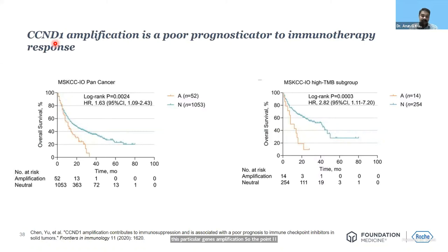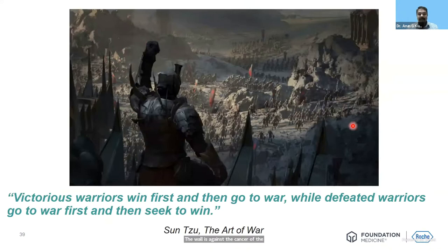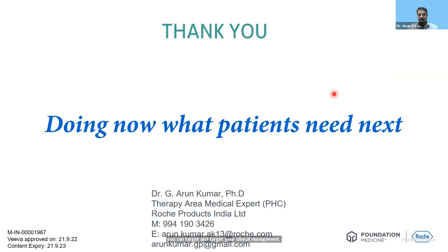The point I would like you to appreciate is that once we understand the genetic architecture of the tumor, we will be able to predict the response to therapies, identify novel therapies, and prognosticate the patient in a much better fashion. I close the talk with words from the Art of War: 'Victorious warriors first win and then go to war, while defeated warriors go to war first and then seek to win.' The war here is against cancer for the particular patient. Genomics plays a very crucial role in understanding the war field, so you can target your clinical management accordingly.